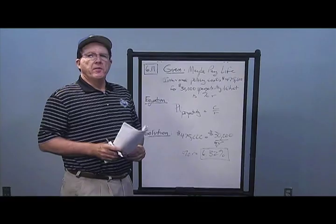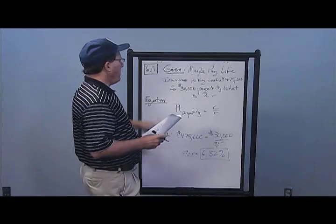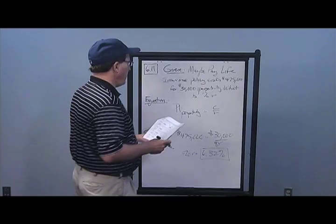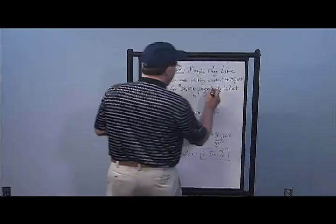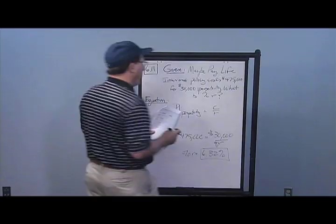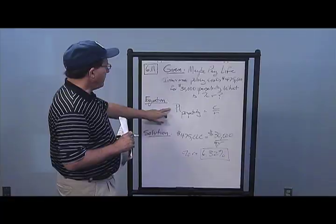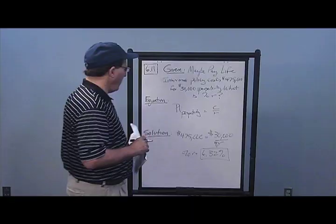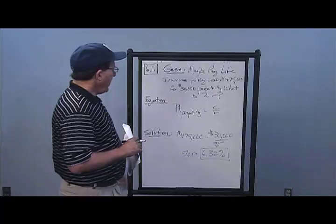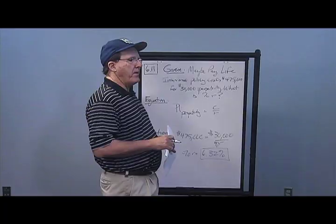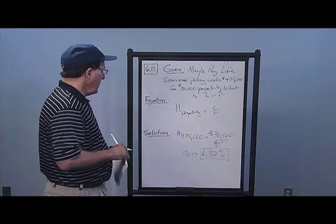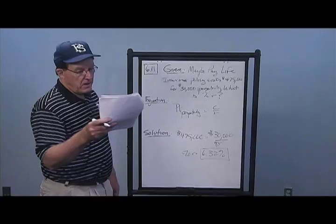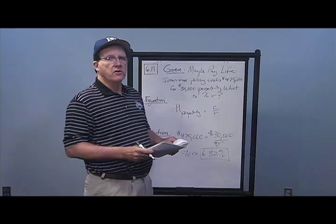In Problem 11, an insurance policy costs $475,000 for a 30-year perpetuity. What is the discount rate? Present value of perpetuity equals C over R, so $475,000 equals the constant cash amount divided by some discount rate. With these givens, I get a discount rate of 6.32%.